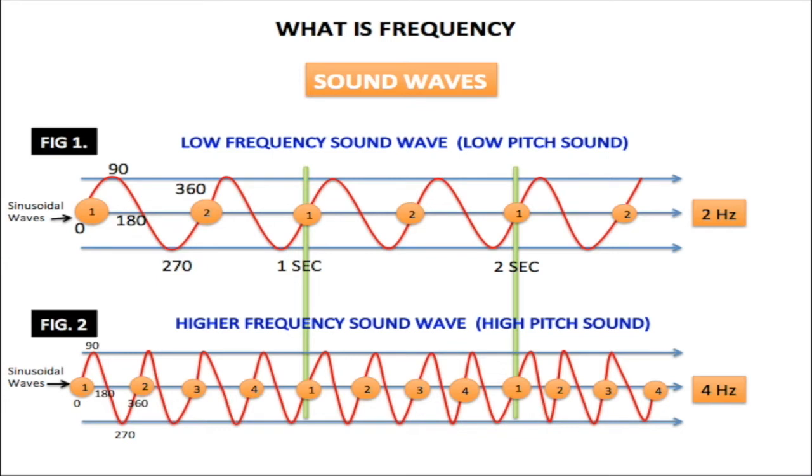Here I have in figure one a low frequency sound wave. This would be a low pitch sound. And this particular sound wave has two cycles per second. Here you have one cycle: 0, 90, 180, 270, 360. Second cycle starts at 0, 90, 180, 270, 360. And here is the one second barrier. So now we have two cycles per second, and the frequency will be two hertz.